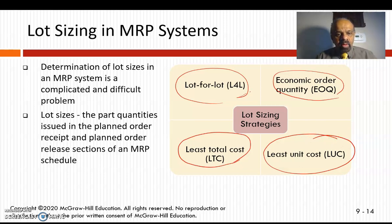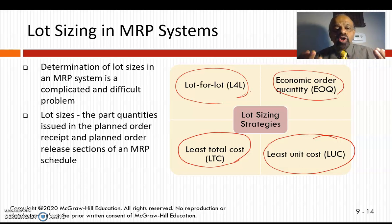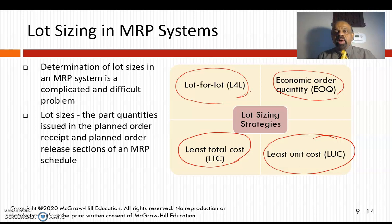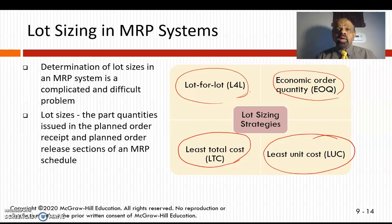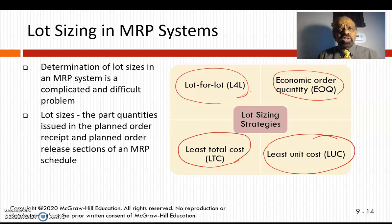Lot size means the quantity of products or sub-products for which you issue a planned order or purchase order. For example, if you want 400 units, with lot-for-lot you buy all 400. But sometimes you can only buy 200 at a time, so you buy 200 now and another 200 the following week, and so on.